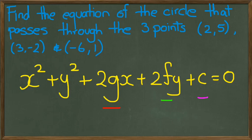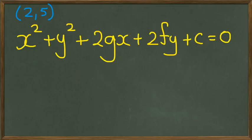I'm going to work on the first point which is (2, 5). So the first equation is going to be 2 squared plus 5 squared plus, well, 2 times 2 is 4g plus 2 times 5 would be